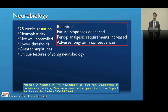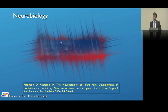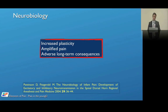Mature fibers, immature connections and controls — excessive, amplified pain. The behaviors are changed: future responses to pain are enhanced. If you cause pain in a neonate or young child, future responses to pain are enhanced — they have a memory for pain. Perioperative analgesic requirements are increased in those that have experienced pain, and they can get adverse long-term consequences. Increased plasticity, amplified pain, adverse long-term consequences — this is important.